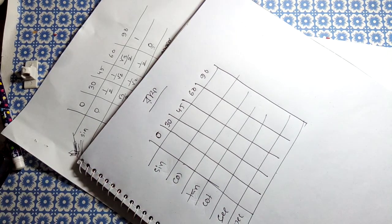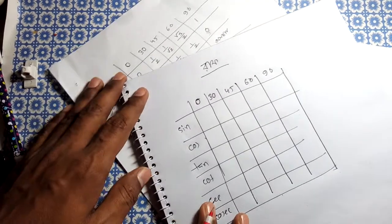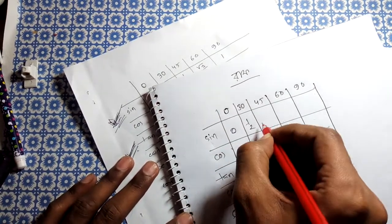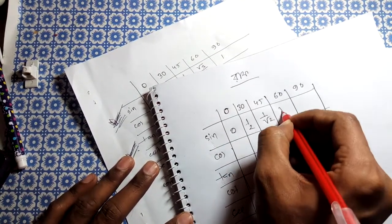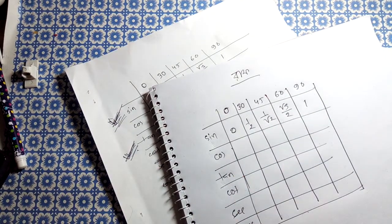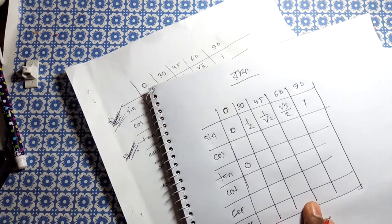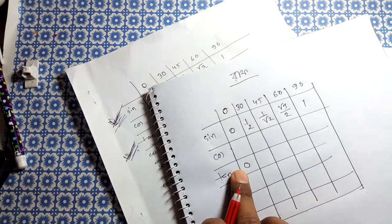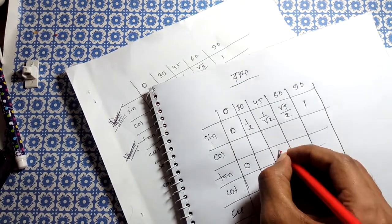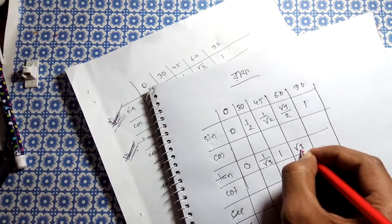Now for sin theta values: at 0 degrees it's 0, at 30 degrees it's 1/2, at 45 degrees it's 1 by root 2, at 60 degrees it's root 3 by 2, and at 90 degrees it's 1. These values follow a clear pattern.